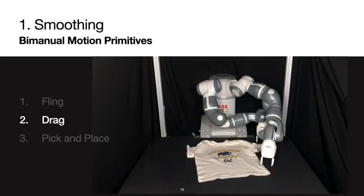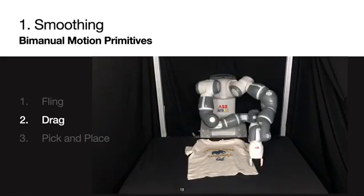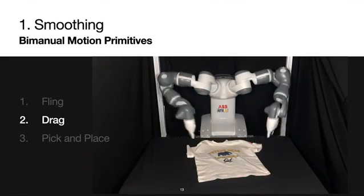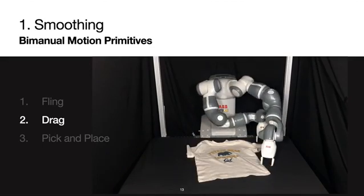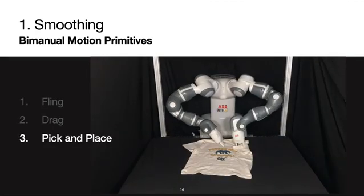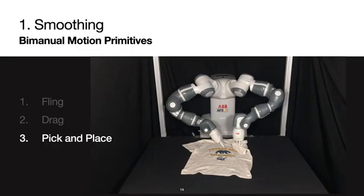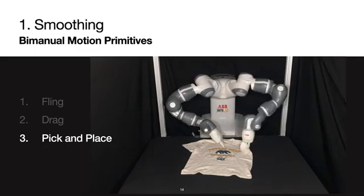Next, we have the drag motion that drags the garment for a fixed distance away from the garment's center of mass, leveraging the friction with the workspace to smooth wrinkles or corners, for example, sleeves folded below the garment. Given a pick and a corresponding place pose, the robot executes a quasi-static pick-and-place action to fix local faults, such as corners or sleeves folded on top of the garment.